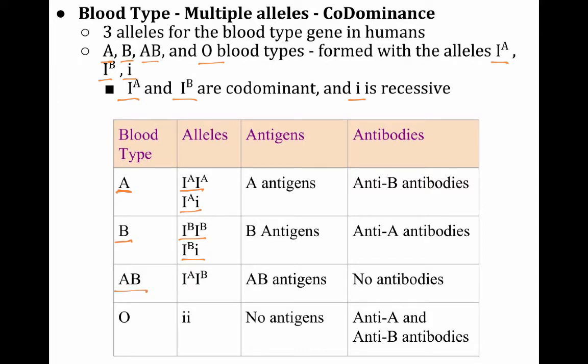If you're type AB blood, your alleles are I^A I^B. This is the one that shows codominance. And then if you're type O blood, then you are little i, little i, because the i's are recessive. So the only way you can show type O blood is if you have two little i's.